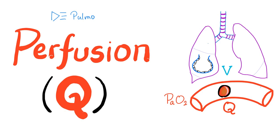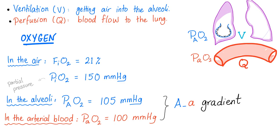What is ventilation? Ventilation is to get air into the alveoli. When there is oxygen in the alveoli, we call it PAO2. Perfusion is to get blood into the pulmonary artery. When oxygen diffuses — this is called diffusion — into the artery, we call the oxygen PaO2. With that being said, let's get started. Ventilation: getting air into the alveoli. Pulmonary perfusion: getting blood to the lungs.